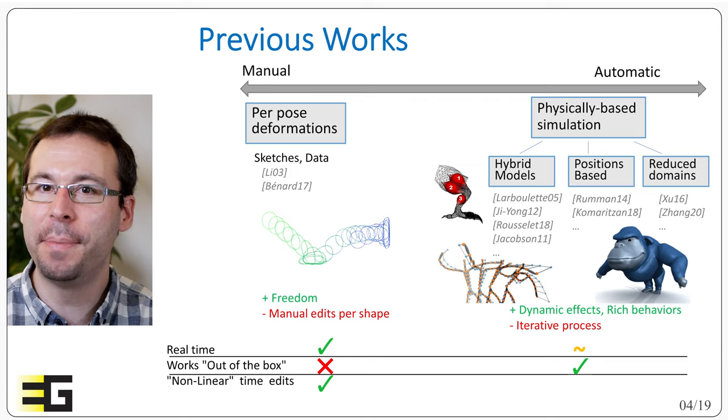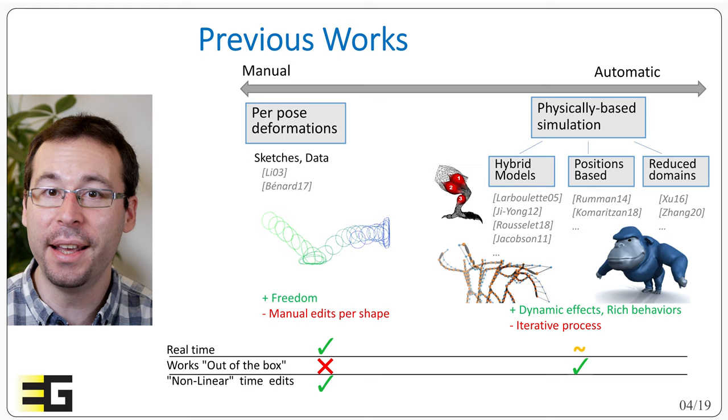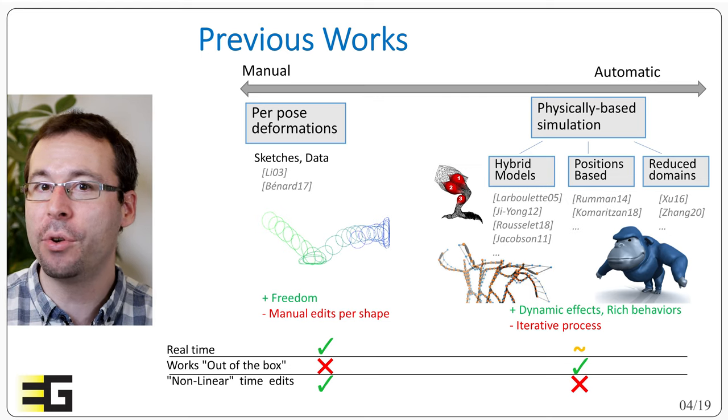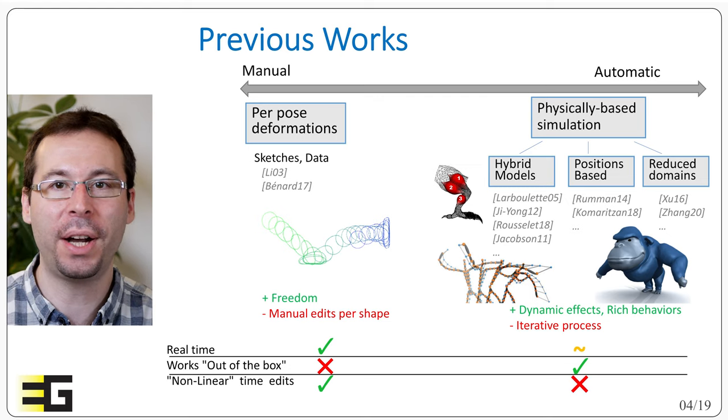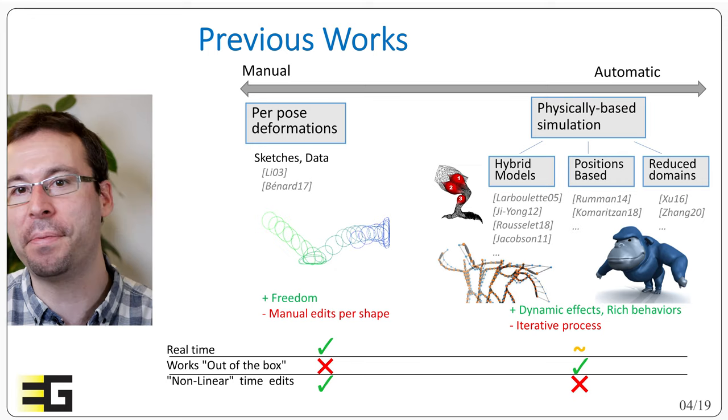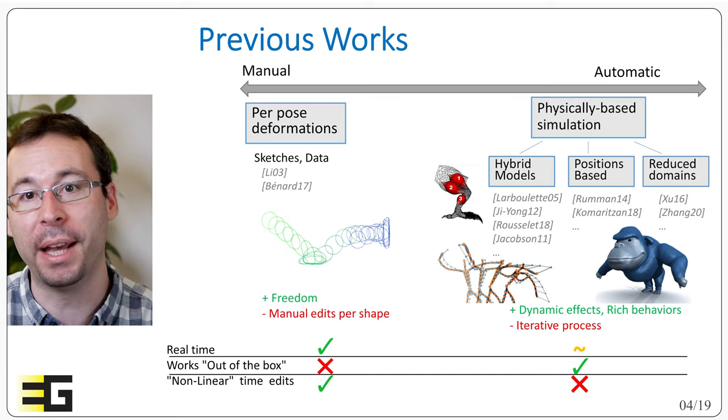In all cases, physics approaches are still costly compared to raw skinning when millions of triangles are involved. Also, direct edits of physics-based simulation should generally be linear in time as the simulation requires time integration. Therefore, any change at time t may affect the future that has to be rebaked.